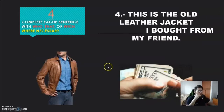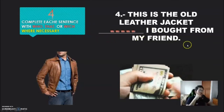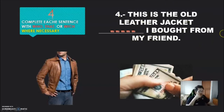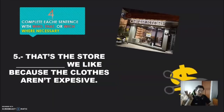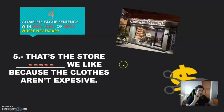Number four: 'This is the old leather jacket ___ I bought from my friend.' The answer is nothing. Because the important thing is 'I bought from my friend,' not the leather jacket — so we can skip the relative pronoun. Number five: 'That's the store ___ we like because the clothes are inexpensive.' Again, nothing — the important thing is 'we like because the clothes are inexpensive,' not the store, so we skip the relative pronoun.